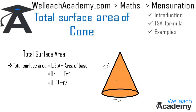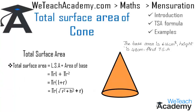We can also substitute the value of slant height l, which equals √(r² + h²), into the formula. This gives the total surface area of a cone as π·r(√(r² + h²) + r) square units.